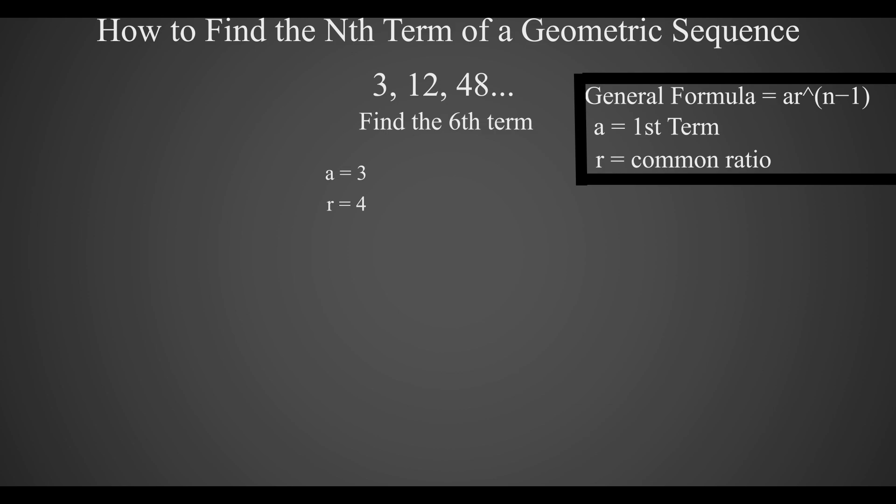Now we just have to substitute our values into the general formula to get 3 times 4 to the power of 6 minus 1, since it's n minus 1 and we want to find the sixth term. That brings us 3 times 4 to the power of 5.